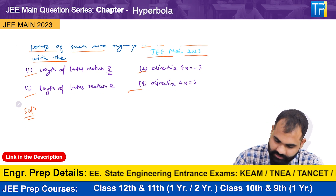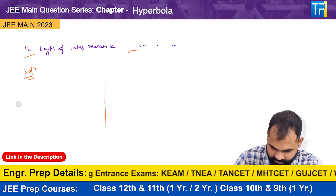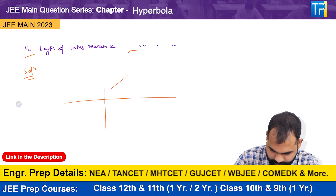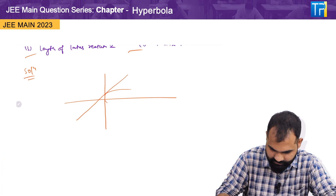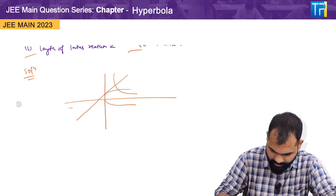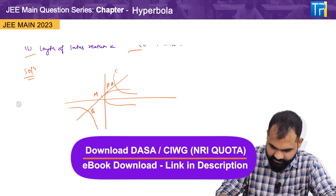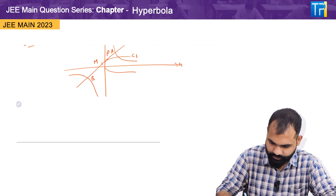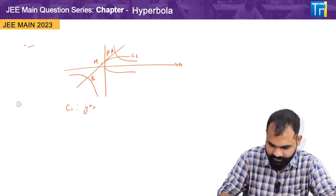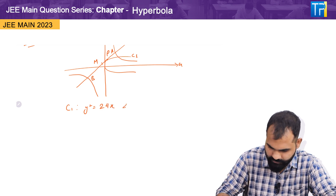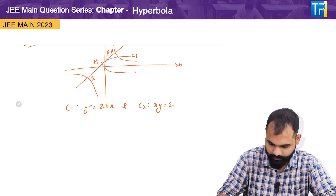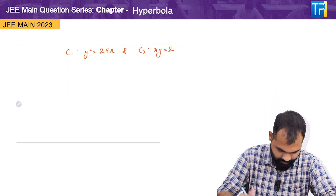According to the question, let me draw this. Here is point B, here is point A, this is curve C2, and this is curve C1, with the x-axis and y-axis shown. Curve C1 is y² = 24x and curve C2 is xy = 2. So let's solve this question.